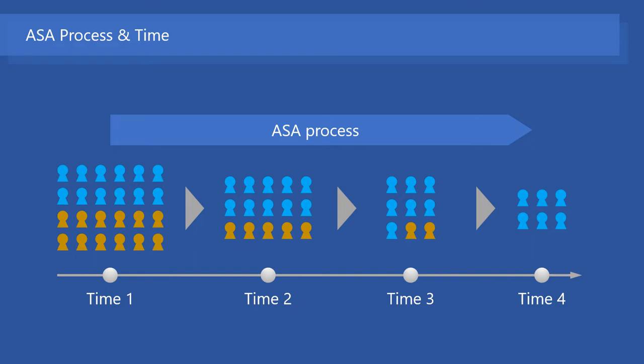A notable point in the ASA model is the gradual change over time through the ASA process. Through the ASA process, the heterogeneity in organizational members decreases over time. Moreover, as within-organization homogeneity increases through the ASA process, between-organizational variability in personality will become clearer over time. As time passes, people who are attracted to, selected by, and remain in an organization determine the organization's characteristics.